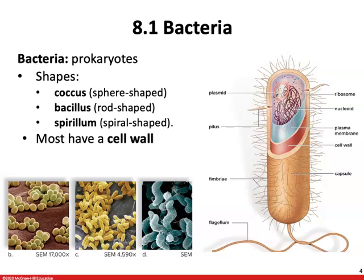Bacteria have a couple of key characteristics. They come in one of three most common shapes: the coccus, which is sphere-shaped; bacillus, which is rod-shaped; and spirillum, which is a curved, sometimes spiral-shaped bacterial cell.